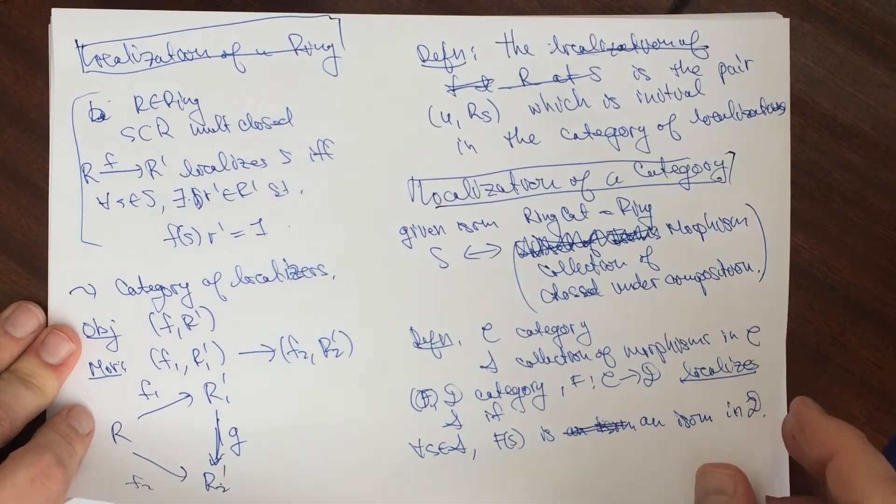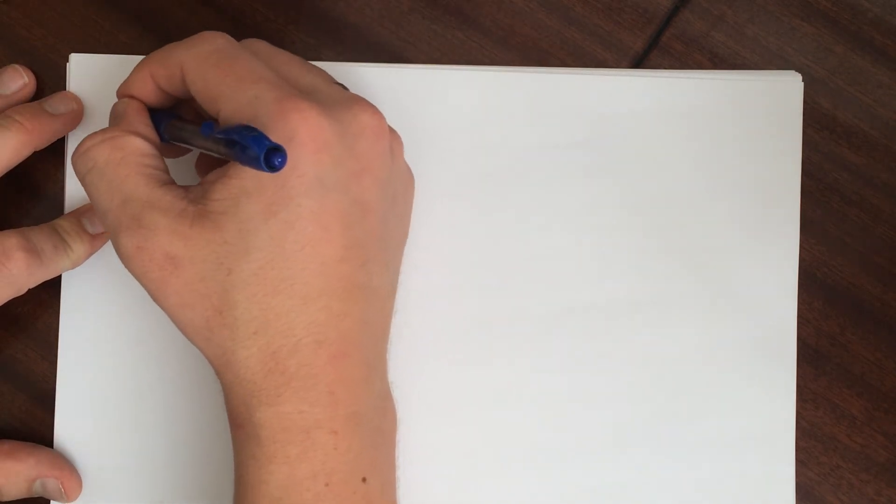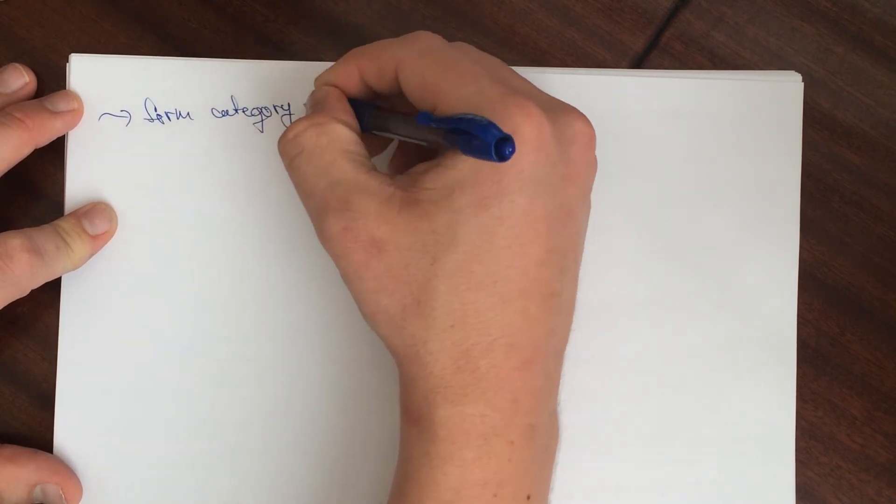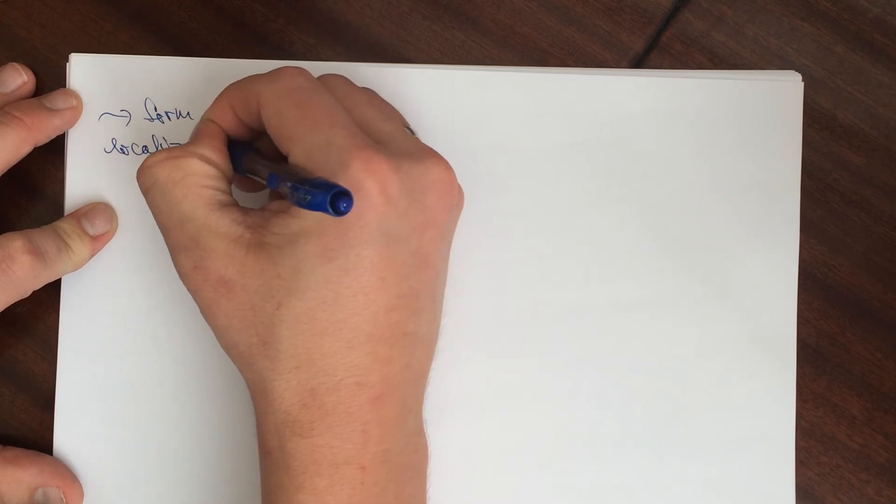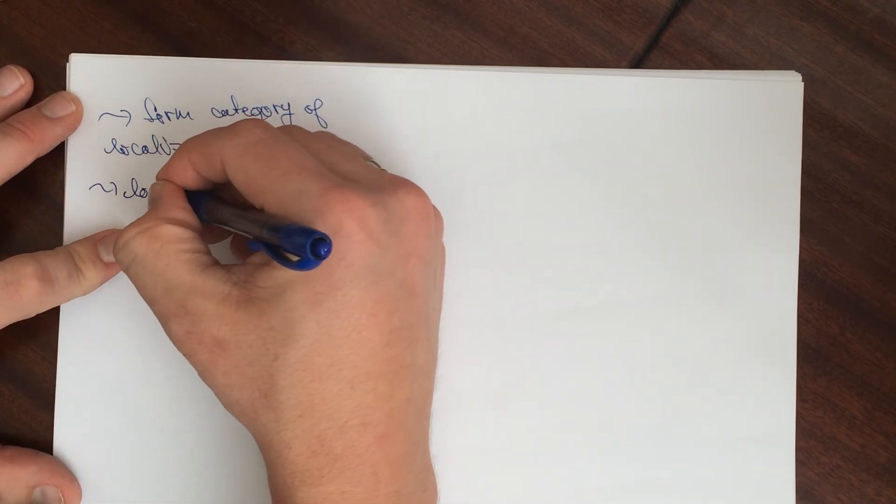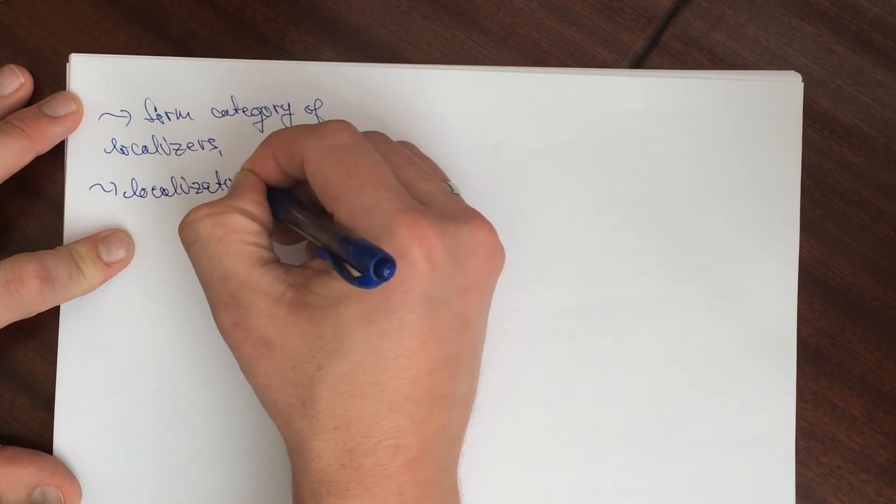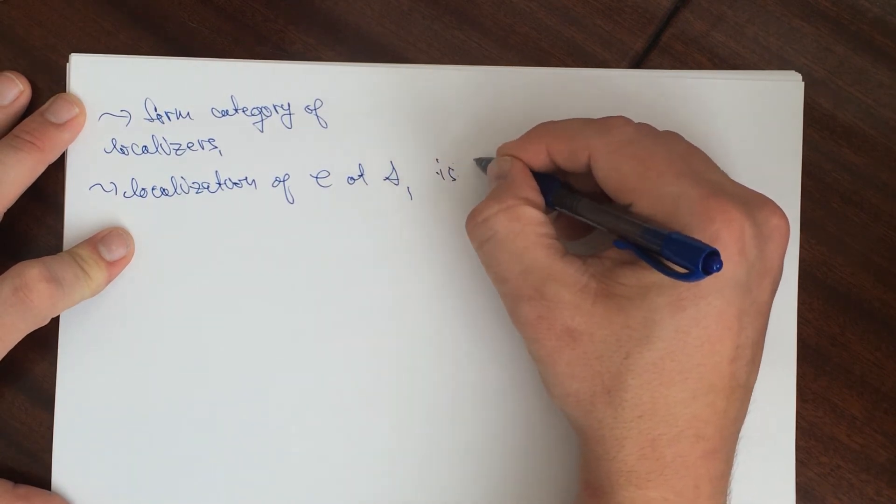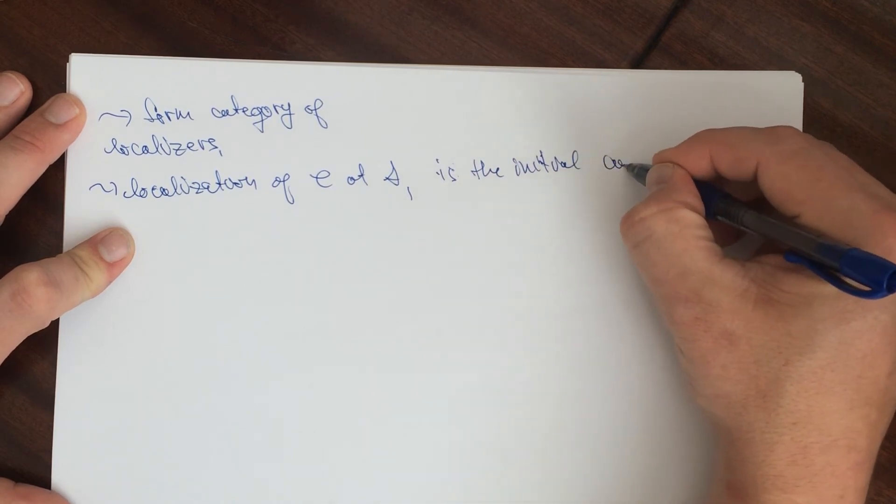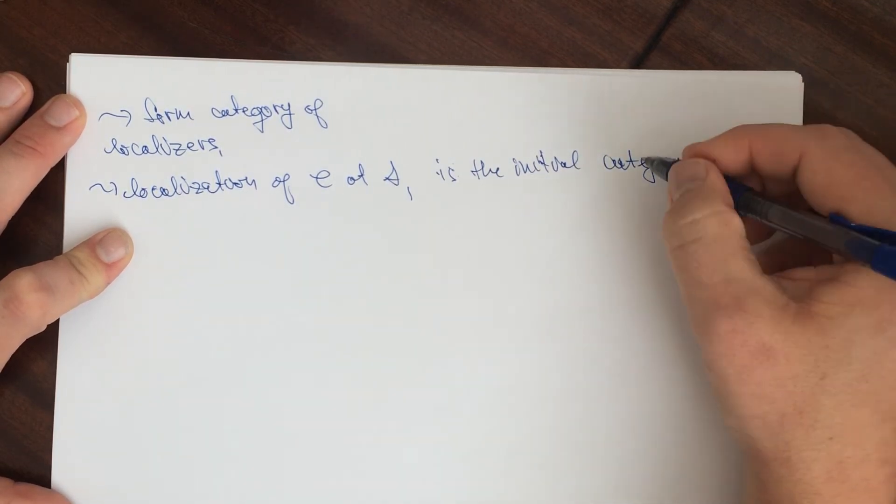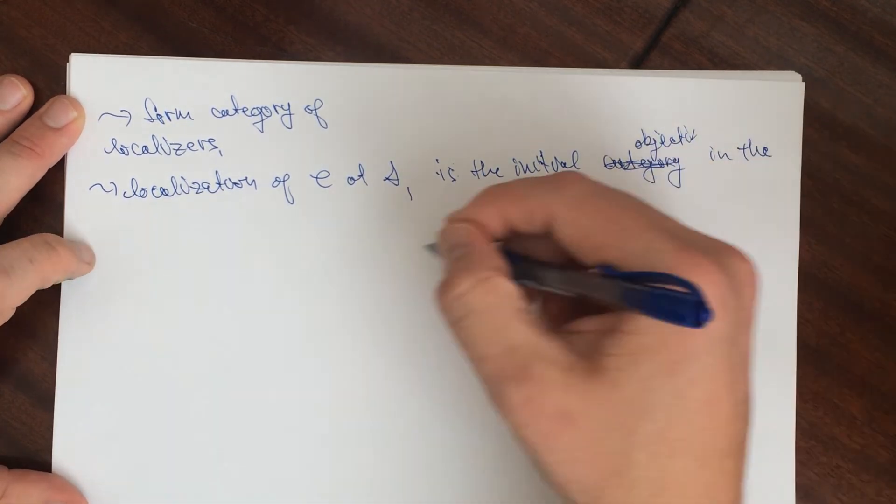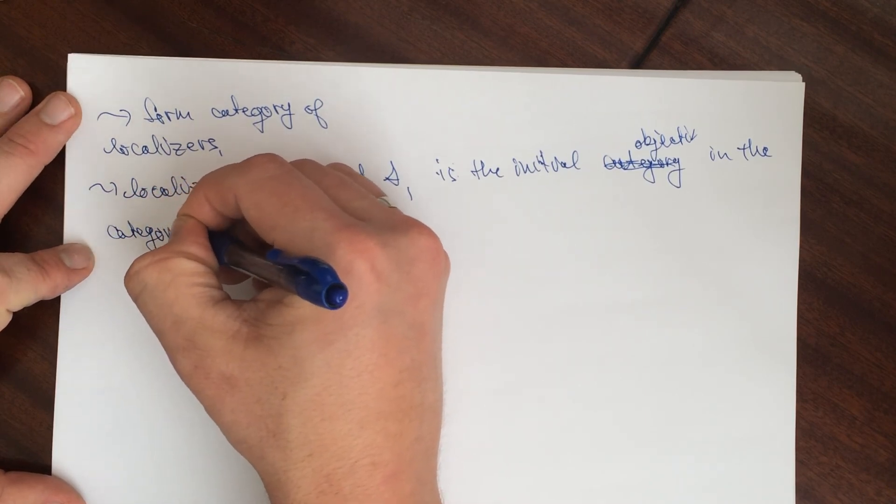Then we form the category of localizers, and then the localization of C at S is the initial category, initial object in that category, if it exists.